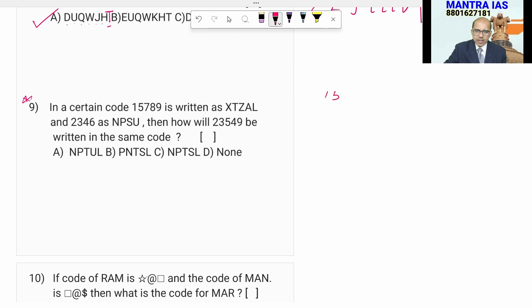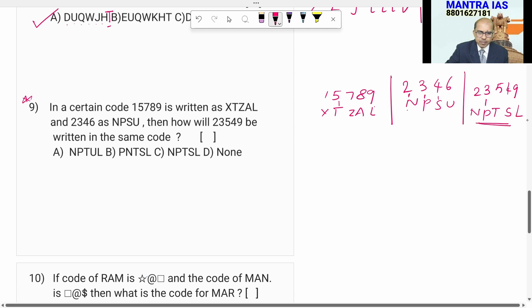Question 9. 1, 5, 7, 8, 9 is coded as XTZAL. In same fashion, 2, 3, 4, 6 is NPSU. How can you code for 2, 3, 5, 4, 9? Already coded. The information already existed. So, 2 letter is coded with N. No need of thinking. Simply blindly you have to write the value. 2 must be represented with N. The code of 3 in this case is same P. The code of 5 is T. Code of 4 is S and 9 is nothing but L. So, option is NPTSL. You can write the option C.